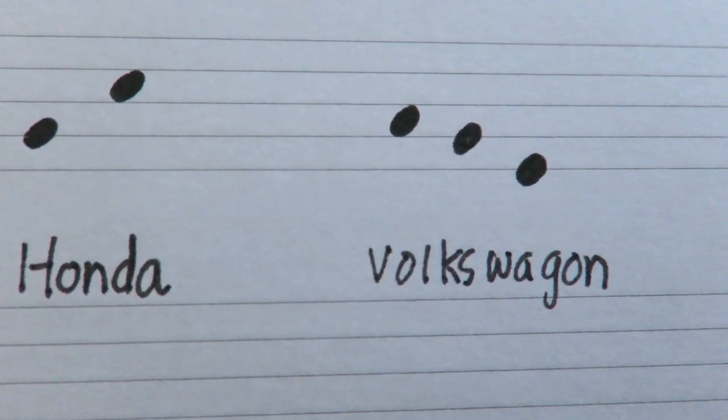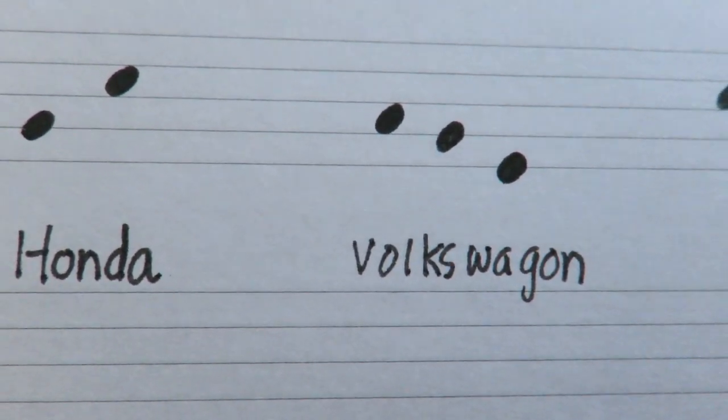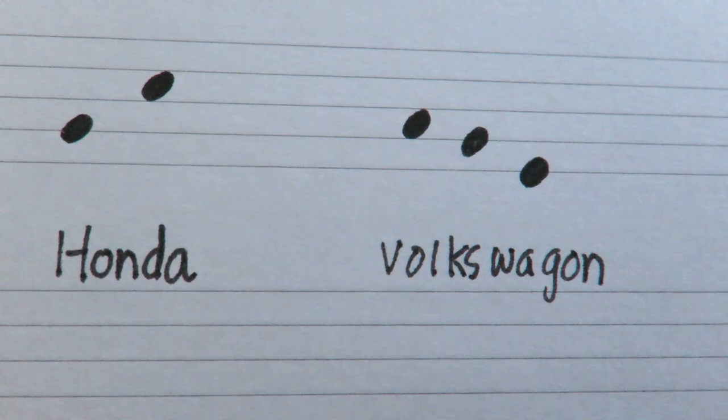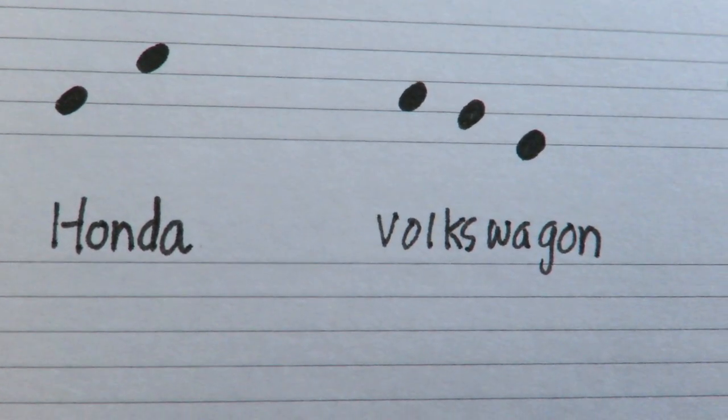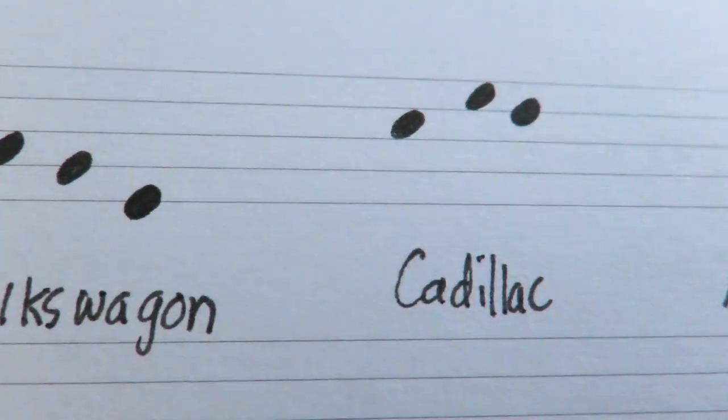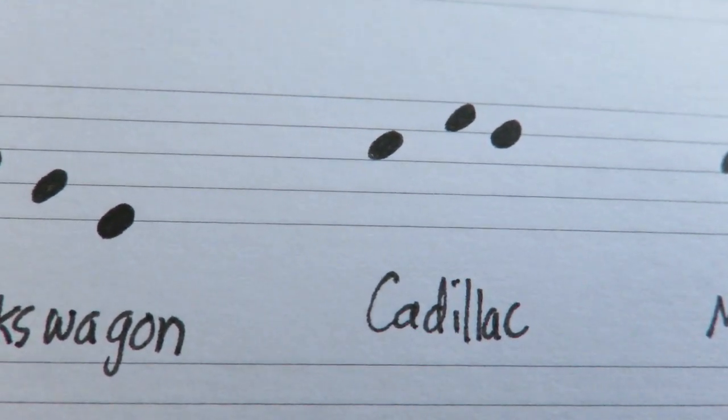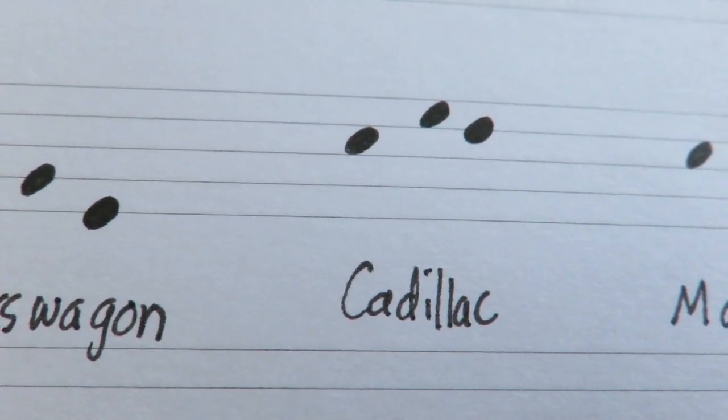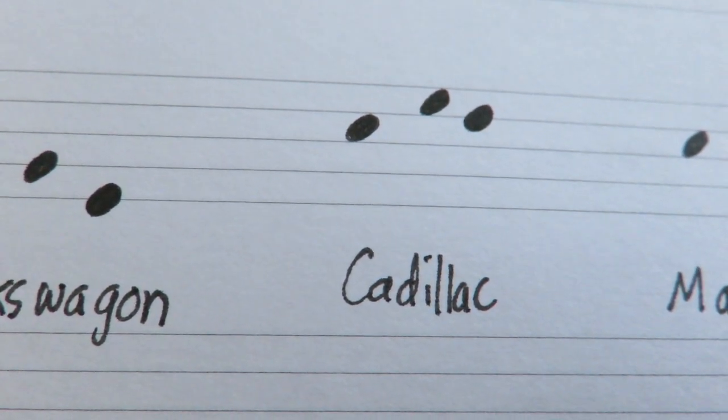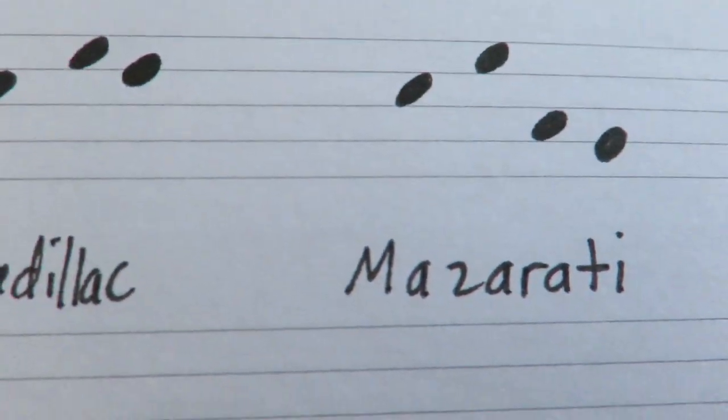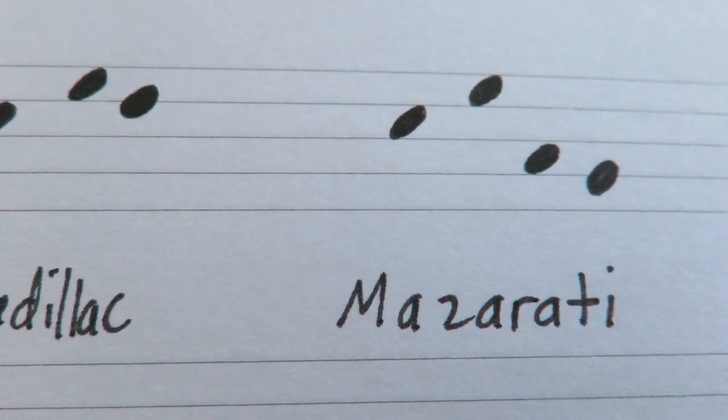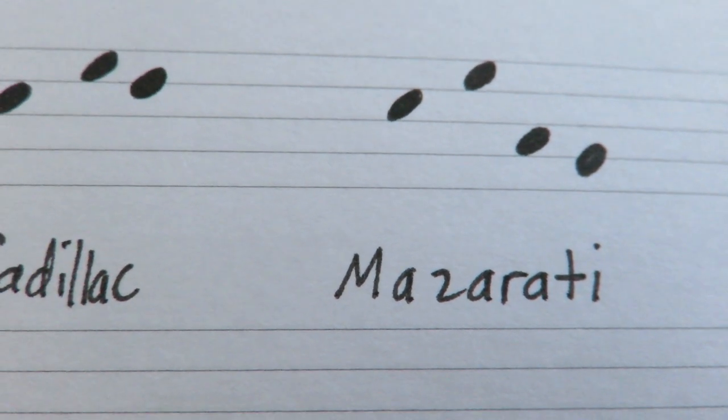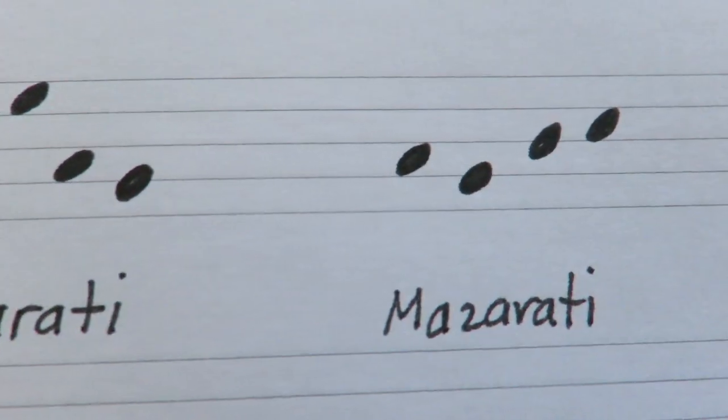The next one is a Volkswagen. An A, a G and an E. The next one, make it into a Cadillac. A C, an E, an E and a D. Then do a Maserati. A C, an E, an A, a G.